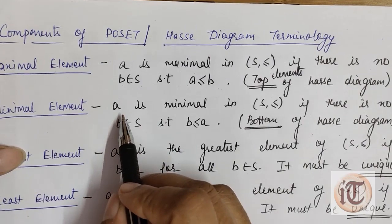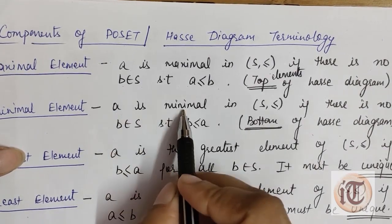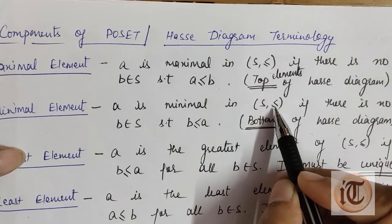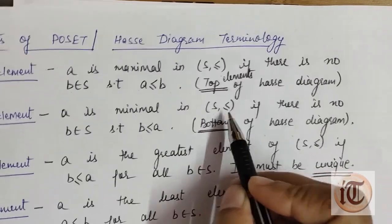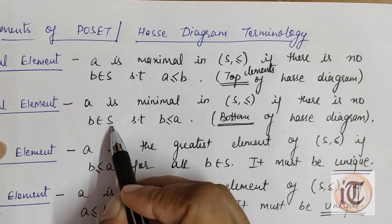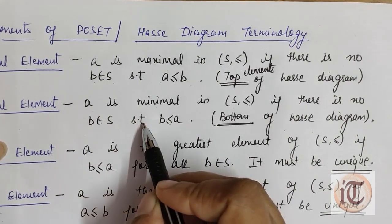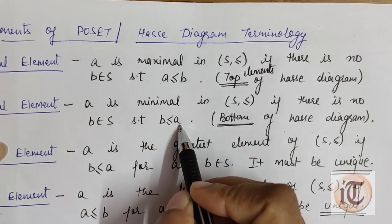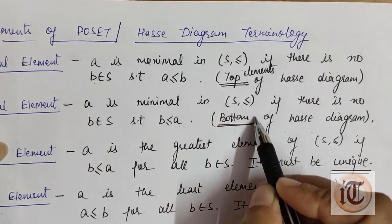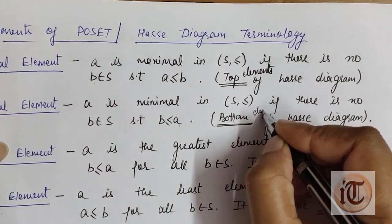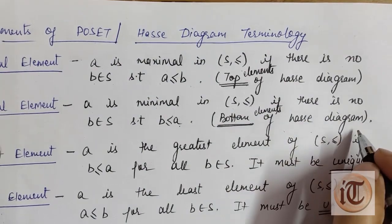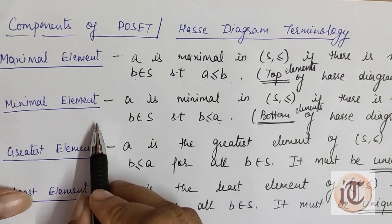The minimal element is defined as: a is minimal in the poset (S, ≤) if there is no element b belonging to S such that b ≤ a. So all the bottom elements of the Hasse diagram give the minimal elements.